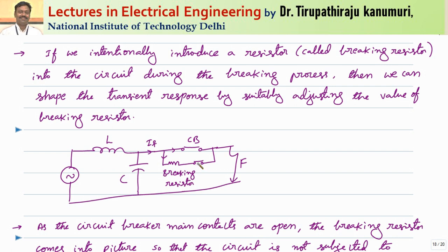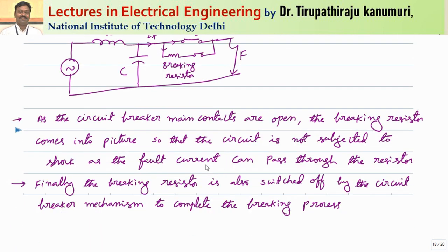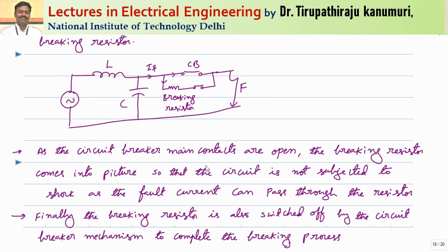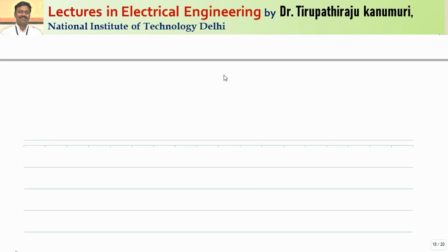Now we will derive how this arrangement improves or decreases the oscillations and what the ideal value of the resistor should be. Whenever the circuit breaker contacts are opening, the mechanism is designed so that the breaking resistor is automatically connected across the contacts. Once the circuit breaker is completely isolated, an auxiliary switch at the breaking resistor is also opened, completing the switching process. So, at the instant of opening the circuit breaker contacts, the breaking resistor comes into picture with the switch closed, allowing current to bypass. Once the contacts are completely open, the auxiliary switch contacts also open, completely isolating the fault.